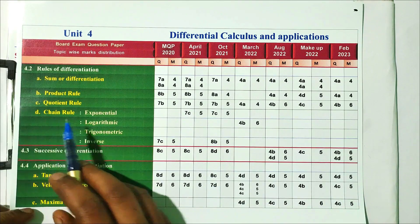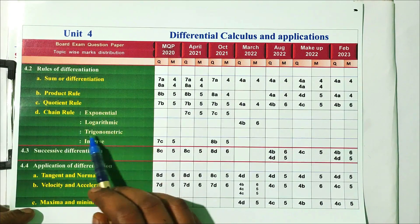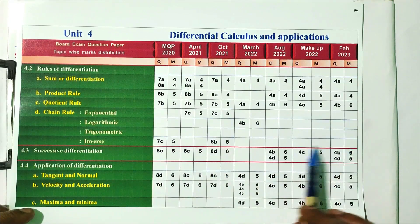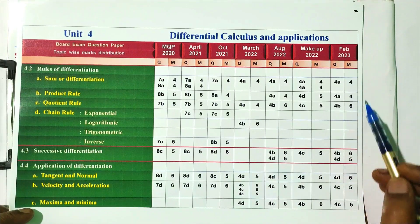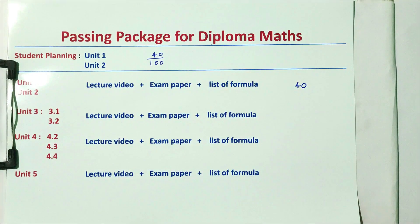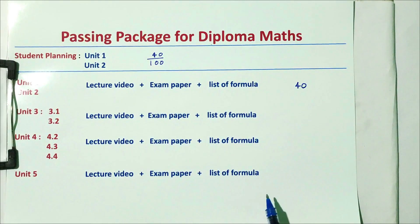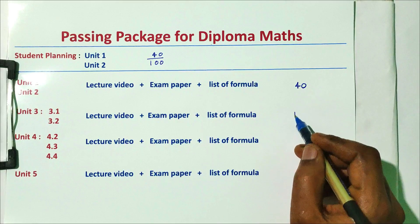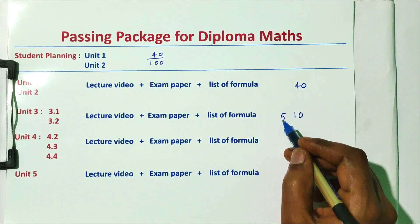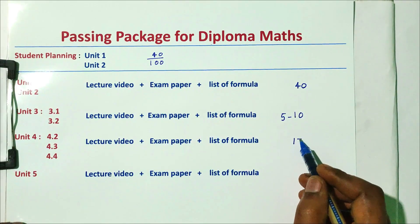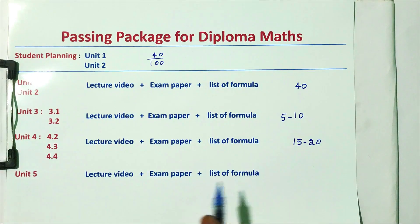Topic 4.2 is chain rule — you can skip this one topic. For Units 1–2, expect around 5–10 marks. For Unit 4, topic 4.2 will be almost 15 to 20 marks confirmed.